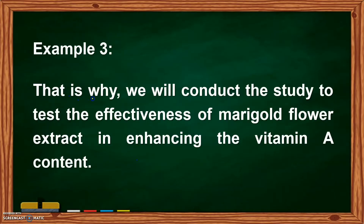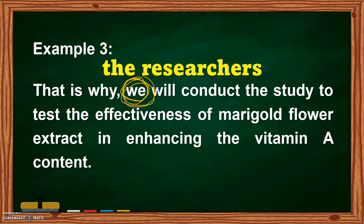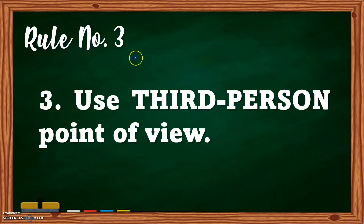Example number three: 'That is why we will conduct the study to test the effectiveness of marigold flower extract in enhancing the vitamin A content.' What is wrong here? We do not use 'we,' 'you,' or 'I.' Avoid these. Instead, replace 'we' with 'the researchers': 'That is why the researchers will conduct the study to test the effectiveness of marigold flower extract in enhancing the vitamin A content.' Avoid using 'we.' For rule number three: use third person point of view.